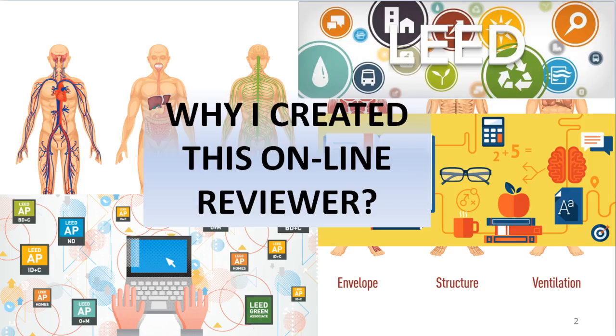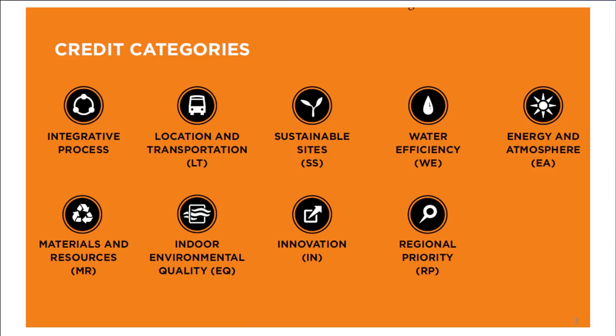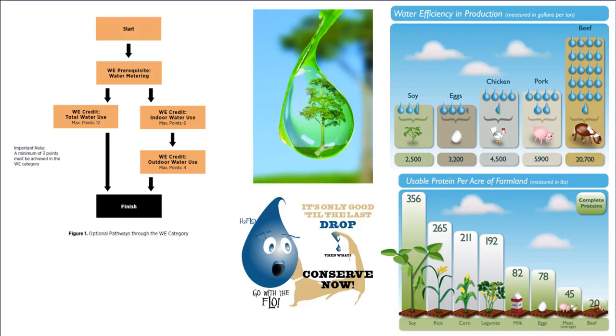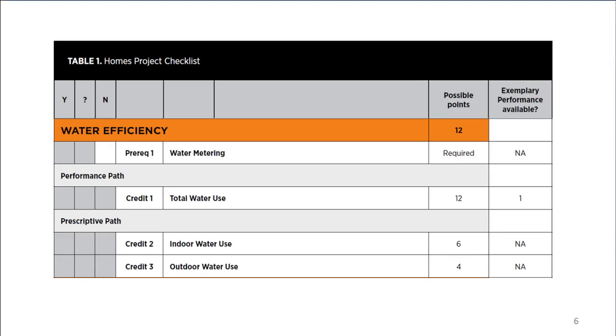Why I created this online reviewer: to help myself and others to pass the LEED AP exam in one shot. These are the LEED credit categories. On my previous video, we discussed Water Efficiency Credit 1, total water use. Now we will proceed to Credit 2, the indoor water use. Indoor water use is the second credit under prescriptive path. It is possible for 6 points.